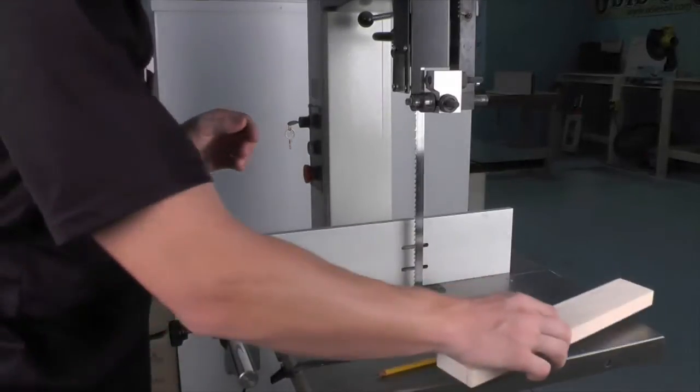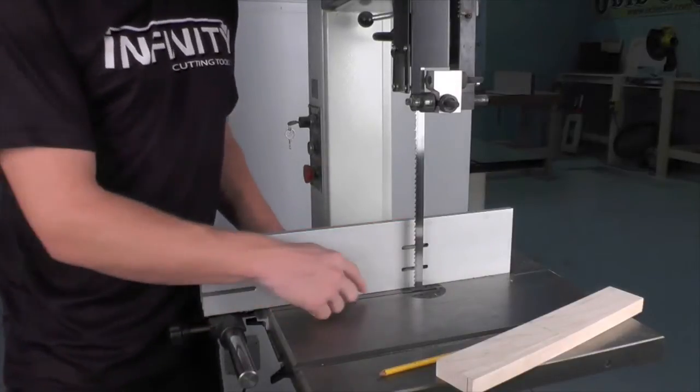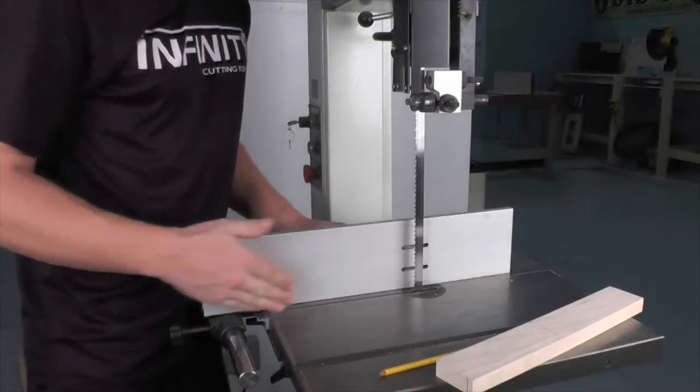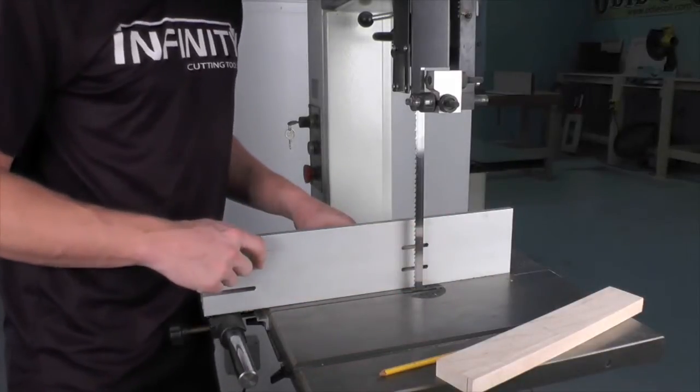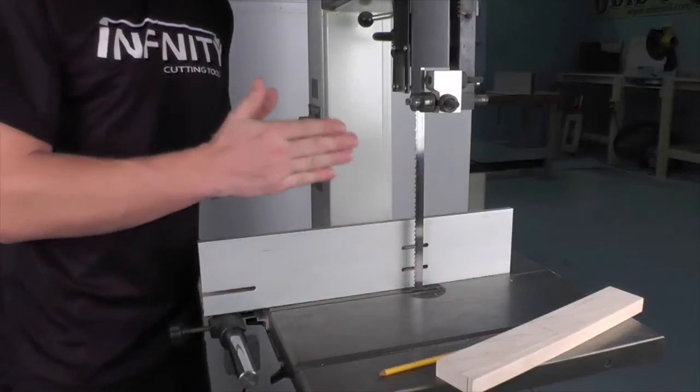Now, I can take that block and set it aside and I can bring my fence over and line it up with that pencil line. I want to make sure that my fence lines up perfectly with the line drawn on the table. This is going to mean that the fence and the blade are in perfect alignment.